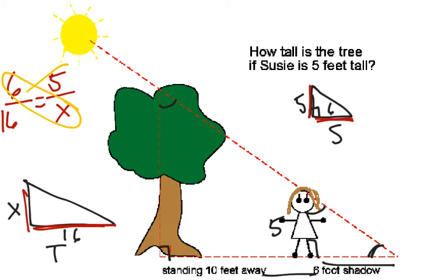Using cross products, we can have an algebra problem. We have 6X equals 80. Divide both sides by 6.